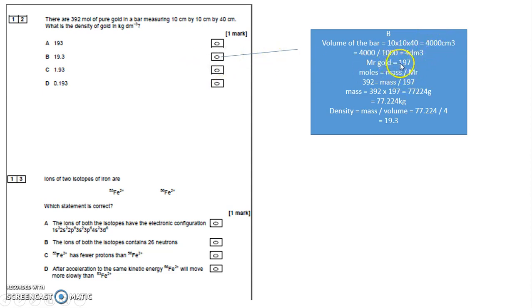Looking on the periodic table, the MR of gold is 197. Moles is mass divided by MR. So 392 moles is the mass divided by 197. So the mass is these two numbers multiplied together, 392 multiplied by 197, 77224 grams.